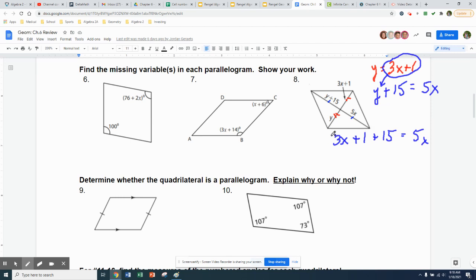3x plus 1 plus 15 is going to equal 5x. So I've taken the y out and I'm going to put parentheses around. I don't need to do this in this case, but I'm going to put parentheses around just to show that's where y used to be. And now it becomes 3x plus 1 because y and 3x plus 1 are the same thing. Then we're left with 3x plus 16 is equal to 5x.